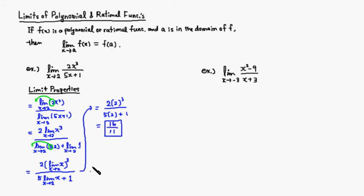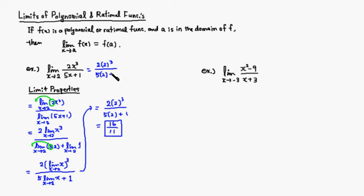That was the method using limit properties. Now let's apply the useful result directly — it takes far fewer steps. We simply plug in x = 2: we get 2 times 2³ over 5 times 2 plus 1, which is 16 over 11, exactly the same value as before. So plugging in x = 2 gives the correct limit.